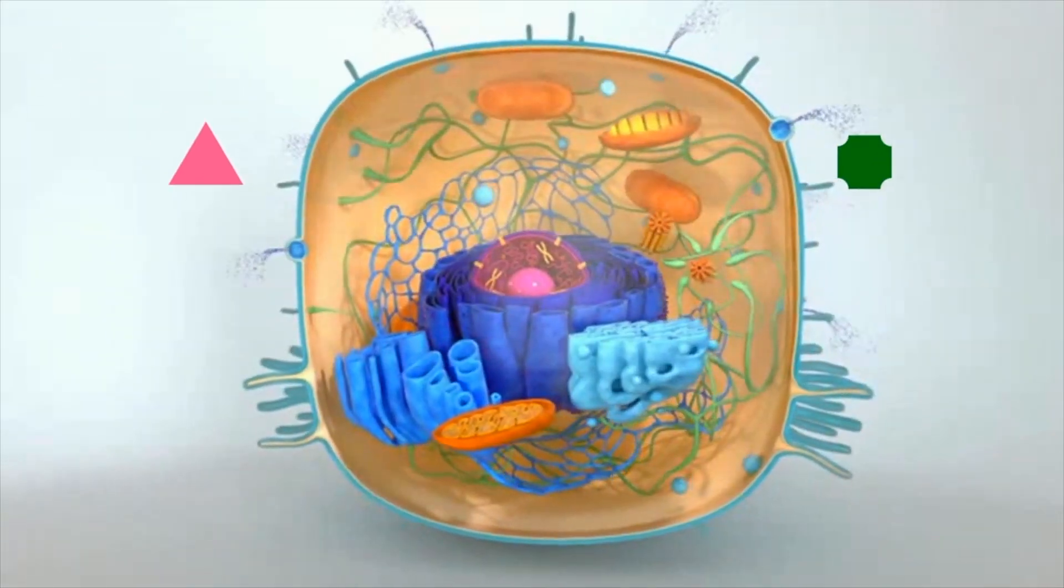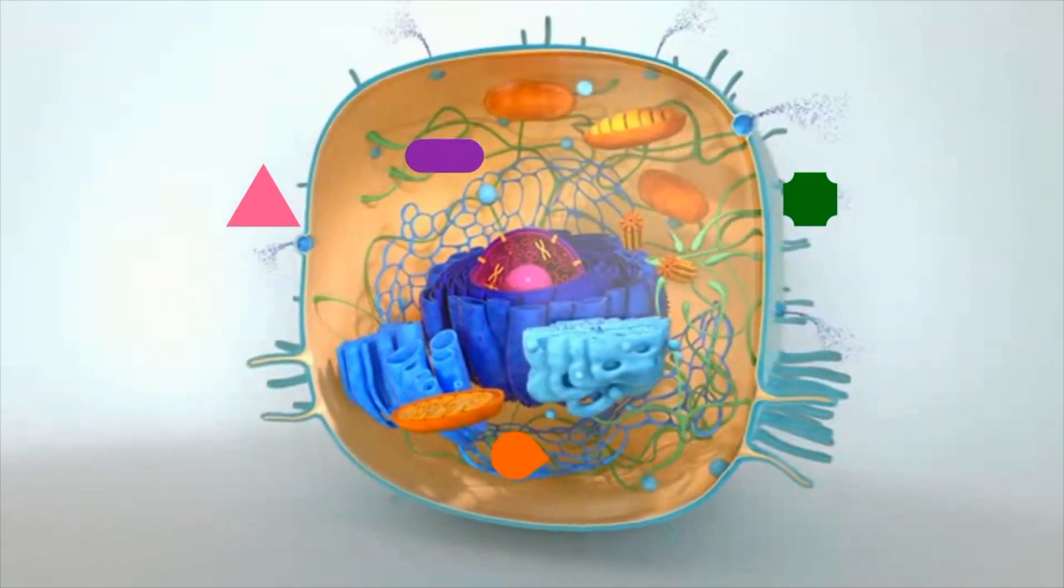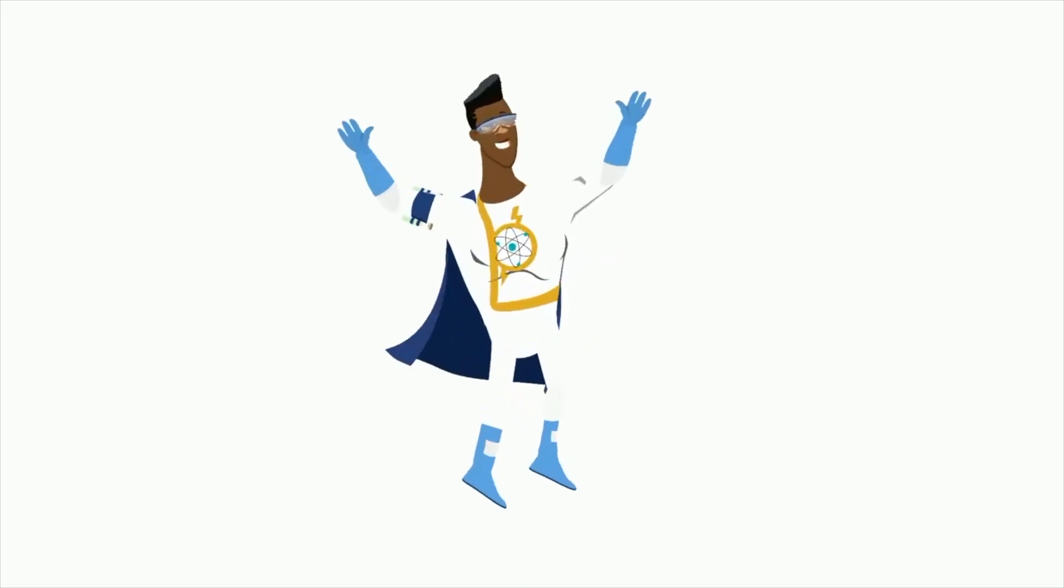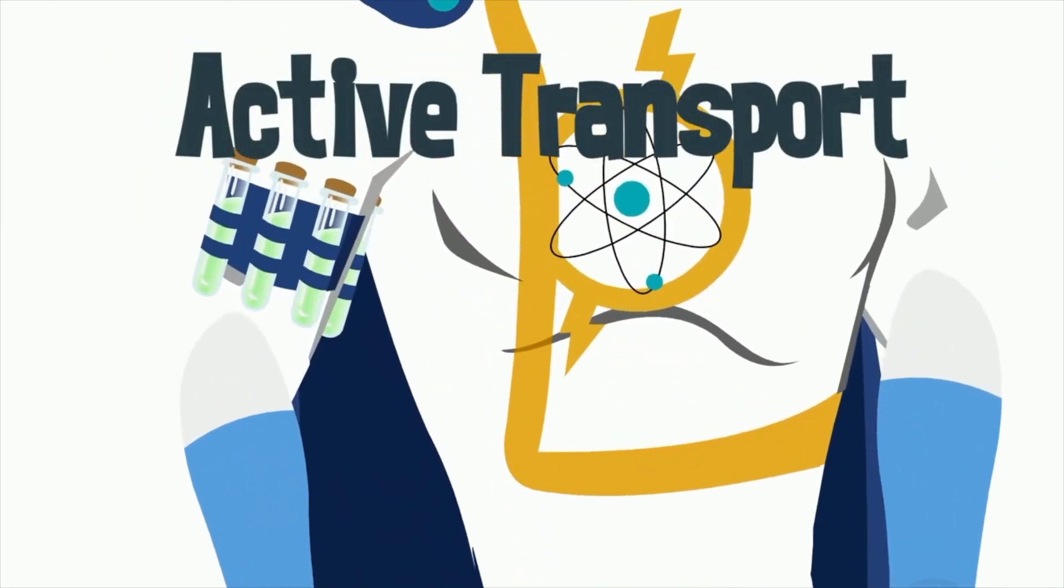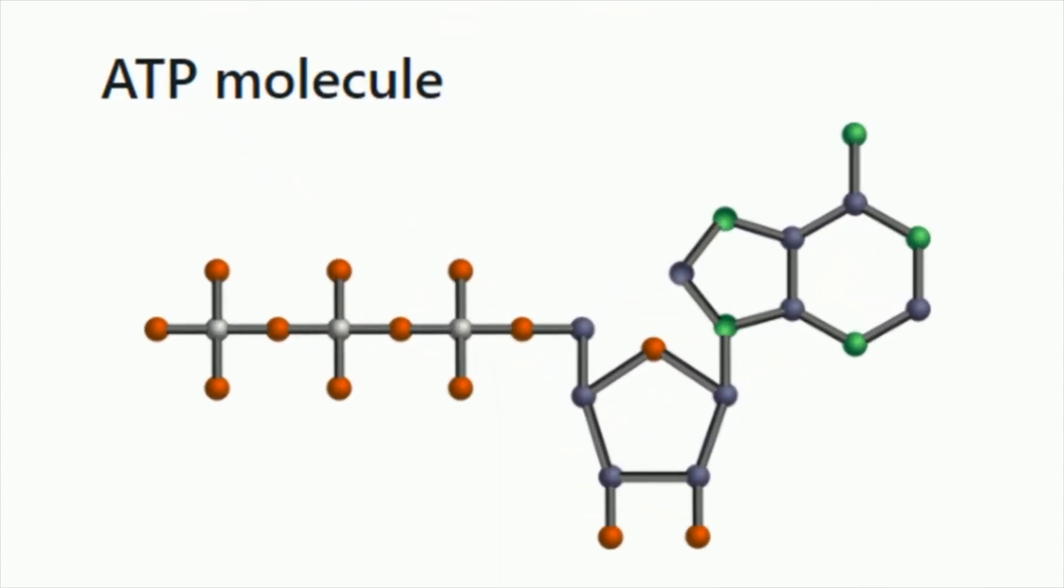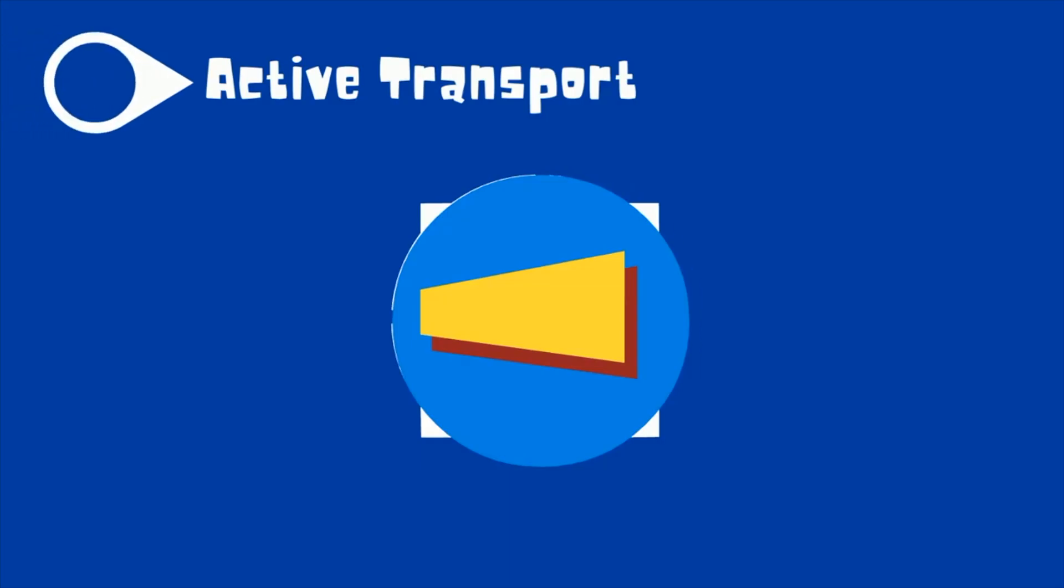However, sometimes these objects are either too large or need to go against the concentration gradient. Active transport comes to the rescue. Active transport requires energy in the form of ATP to move these objects in and out. Let's take a look at three types of active transport.